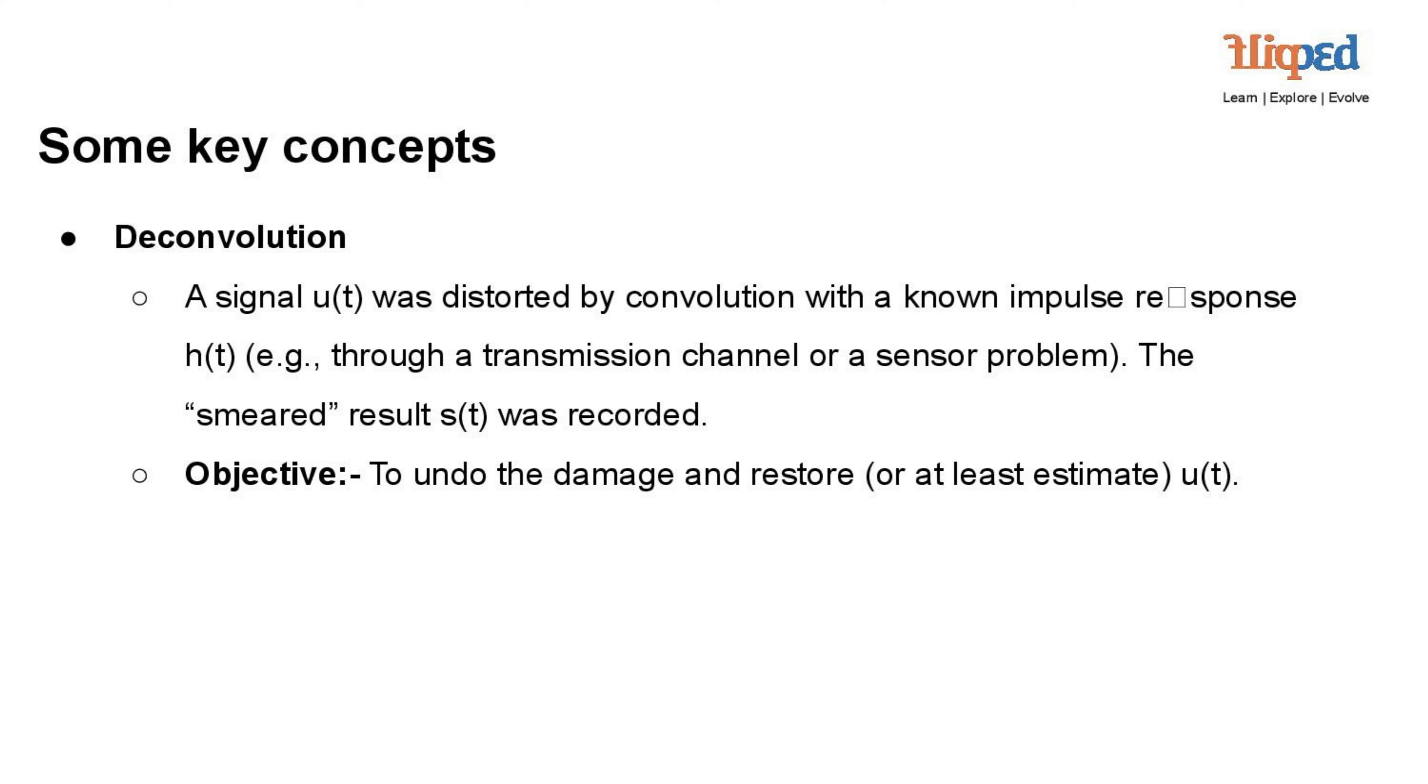Deconvolution techniques are used in signal processing and other fields to restore the original signal or obtain an estimate, but this process can be challenging due to noise and system complexities. The accuracy of the restored signal depends on various factors, such as signal-to-noise ratio and the availability of additional information.